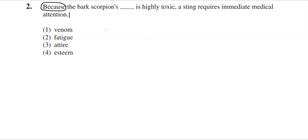בואו ניגש לתשובות ונראה מה מתאים לנו מבחינת התרגום. ונום זה רעל, פתיג זה עייפות, הטייר זה איזשהו לבוש, ואיסטים זה הערכה.